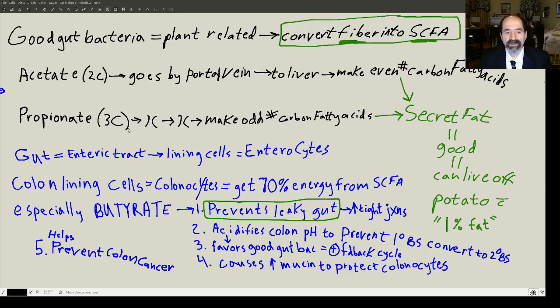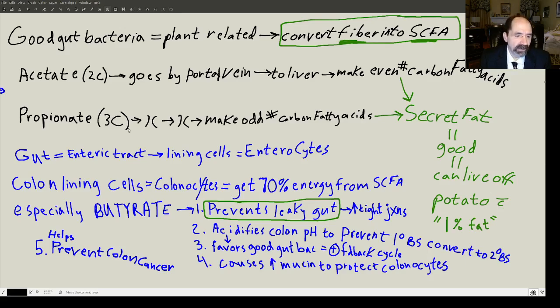Dennis Burkitt felt we should be eating about 100 to 150 grams of fiber per day, but the average American is only eating about 12 to 15 grams per day. It's a good idea to at least get about 50 grams if you can. If you're eating a plant-based diet, it becomes natural to get it.